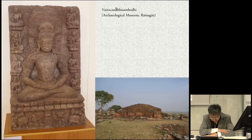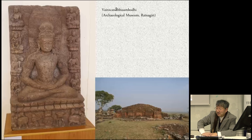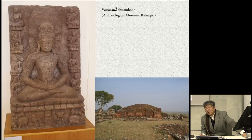Many examples of this combination of Vairocana Abhisambodhi and the Eight Great Bodhisattvas have been identified outside India. One typical example is a Dunhuang painting in the British Museum: Vairocana Abhisambodhi in the center with four bodhisattvas on each side. This was created during the occupation of Dunhuang by Tibetans, as indicated by the Tibetan inscription on the canvas, probably dating to the late 8th to early 9th century.